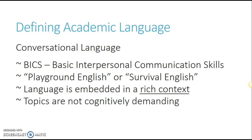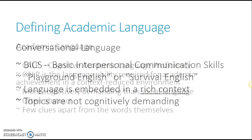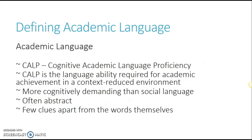There are two different kinds of language. You've got the conversational language, which they call BICS — Basic Interpersonal Communication Skills — and we call that their playground English. It's what they're going to use when they're hanging out with their friends and talking. The topics are not going to be cognitively demanding — they're not talking about the laws of gravity or how to solve a quadratic equation. And then we have academic language, which they abbreviate CALP — Cognitive Academic Language Proficiency — which is more cognitively demanding. A student might be really good at speaking in playground language but struggle with academic language, and that's normal.